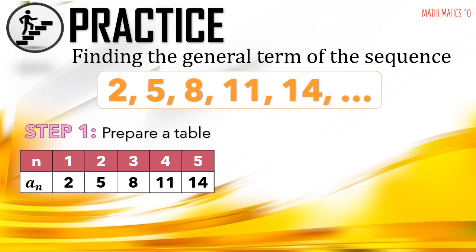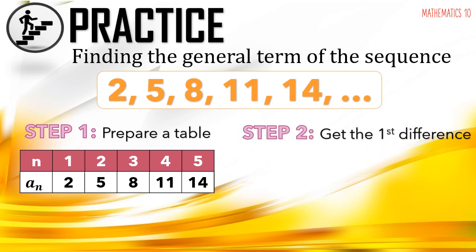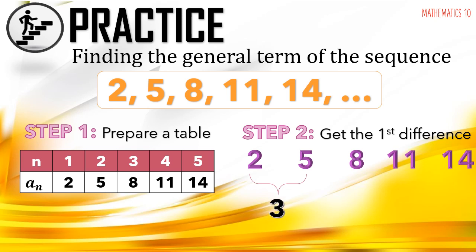Next, put the a sub n row based on the given sequence. Since the first term is 2, it should be aligned with n equals 1. The second term, 5, aligned with n equals 2, and so on. For the second step, get the first difference by subtracting consecutive terms: 5 minus 2 equals 3, 8 minus 5 equals 3, 11 minus 8 equals 3, and so on.